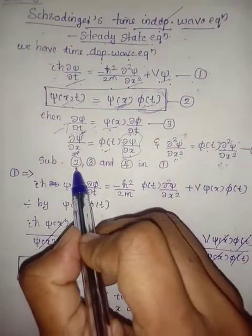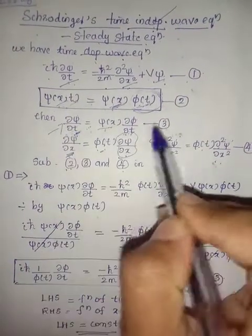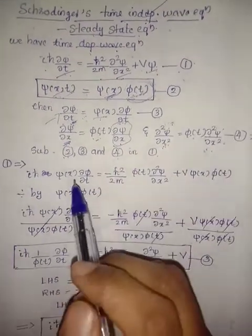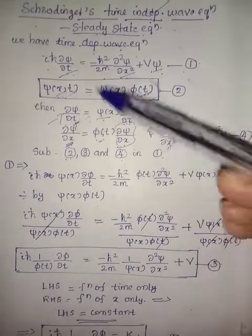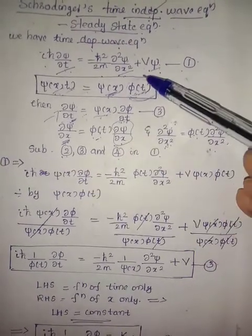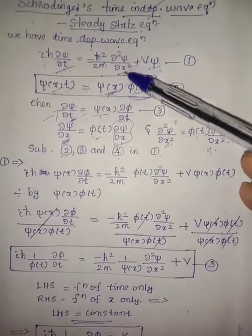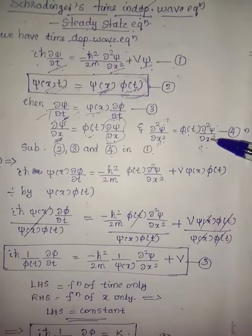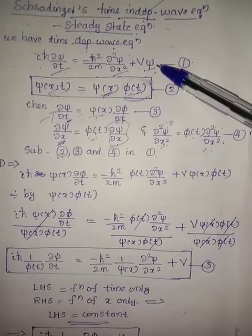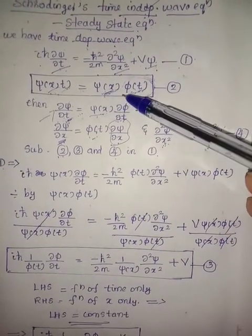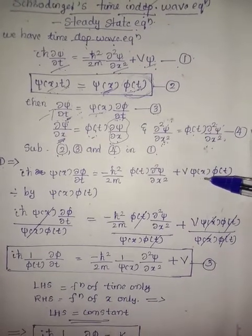Now we substitute equations 2, 3, and 4 into equation number one. Equation one becomes: iħ · ψ(x) · ∂φ/∂t = −ħ²/2m · φ(t) · ∂²ψ/∂x² + V · ψ(x)·φ(t). This is a long equation involving both x and time in each term — it is in mixed form.